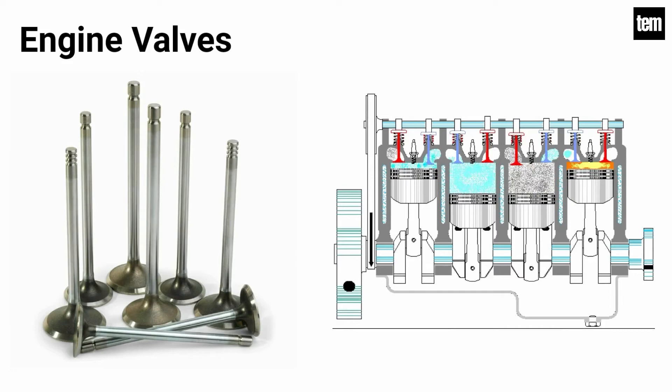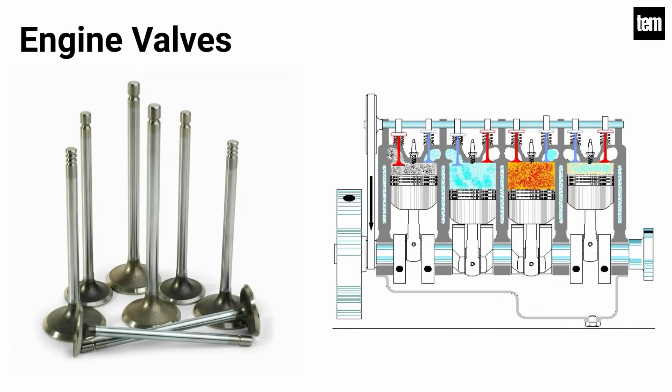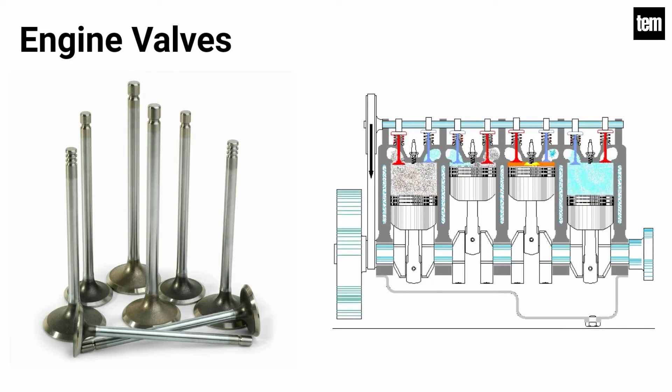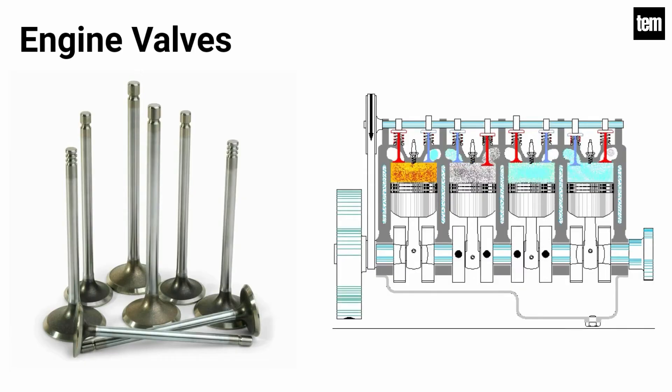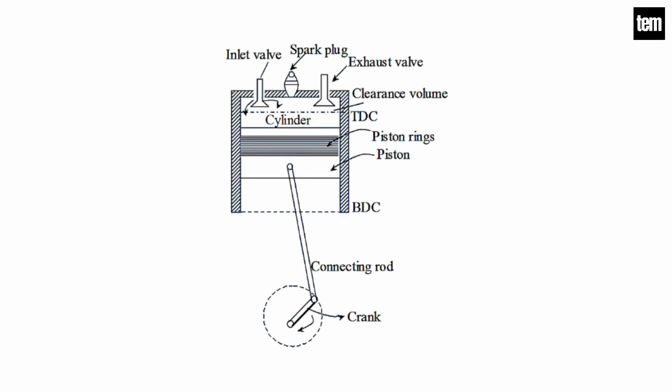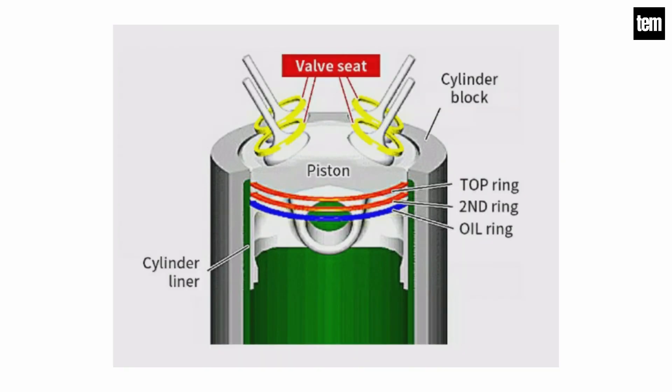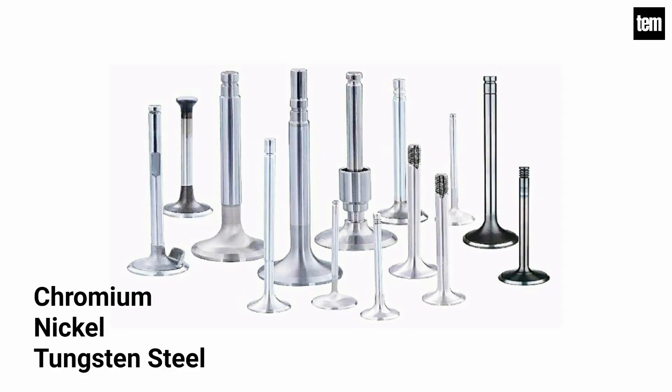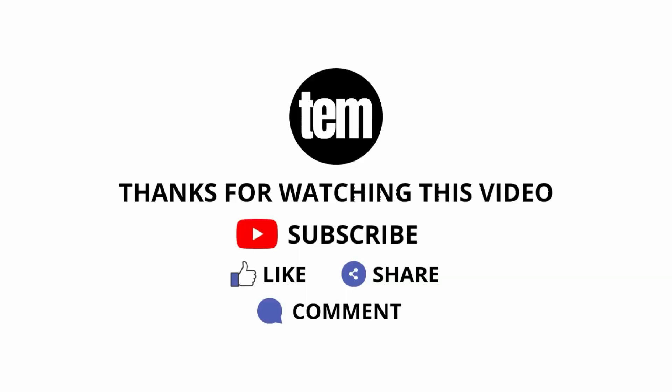Engine valves: These are essential to control the timing of air-fuel mixture entry into the cylinder and combustion products out of the cylinders. Engine valves are located at the inlet and outlet openings of the engine cylinder. The valves fit on the valve seats in their closed position. The valves are mainly made of high heat-resistant metals such as chromium, nickel, or tungsten steel. Thanks for watching this video till the end.